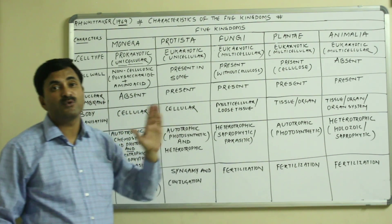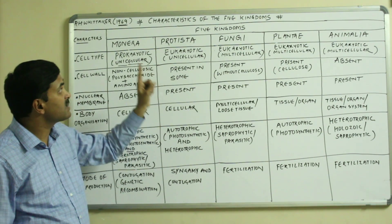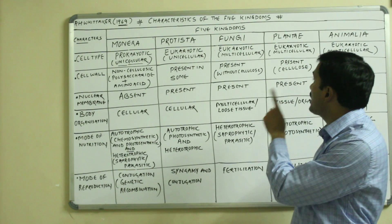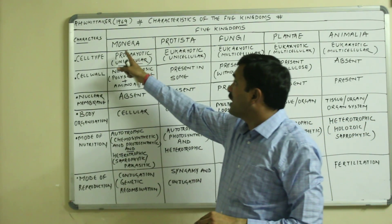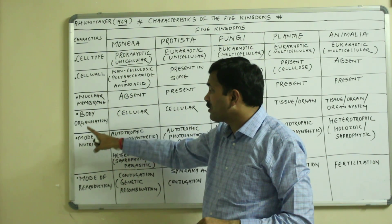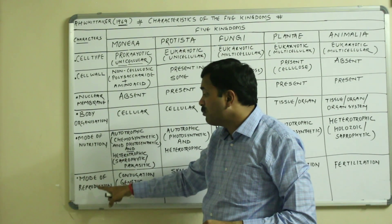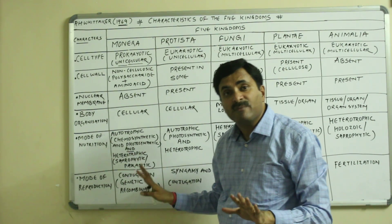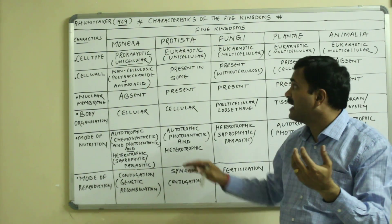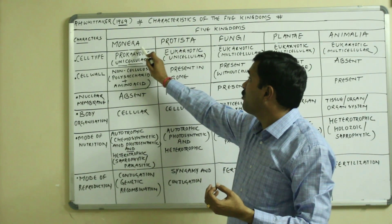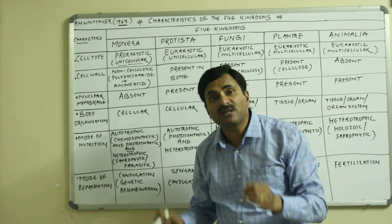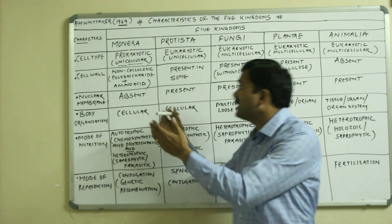So this was the comparative account of Monera, Protista, Fungi, Plantae, and Animalia, covering cell type, cell wall, nuclear membrane, body organization, mode of nutrition, and mode of reproduction. This is the best way to study the five kingdom classification. In coming videos I will be making new videos on each kingdom in detail. Keep watching, and if you want to take a screenshot of this video, you can. Thanks a lot.